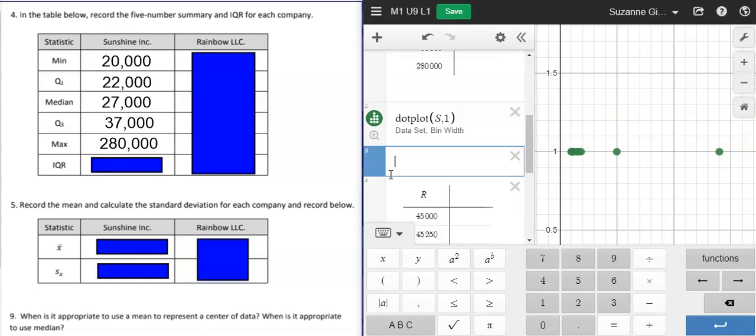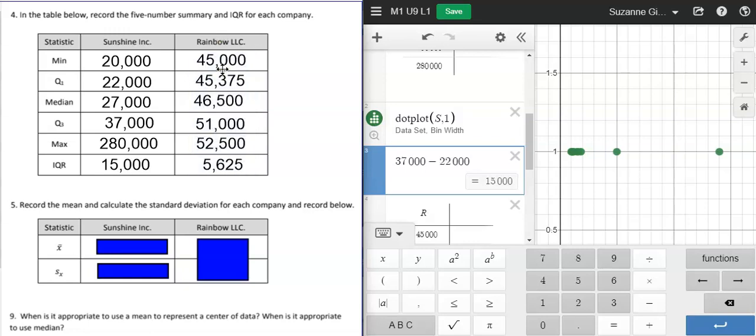And if I want my IQR, my inner quartile range, I'll just take my third quartile and subtract my first quartile, and I get that 15,000. I would do the same thing for the Rainbow company and get those values.